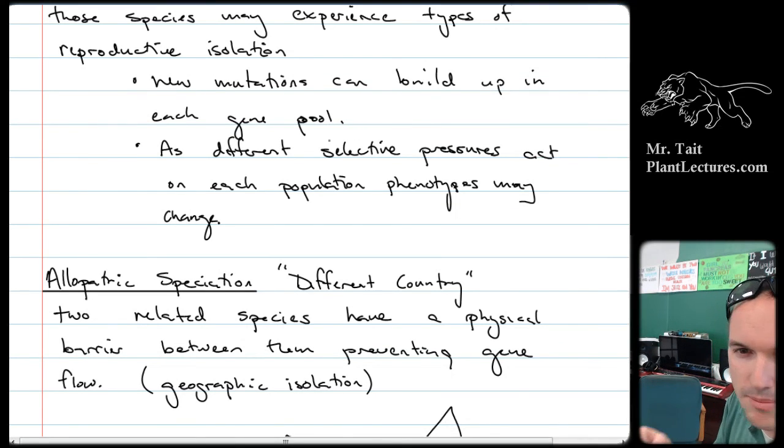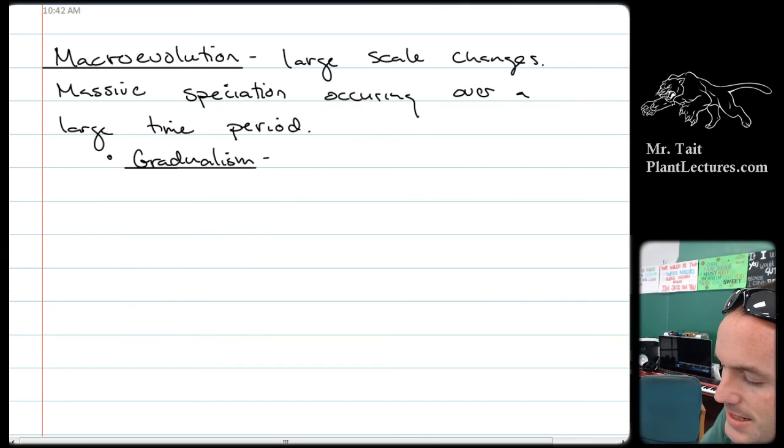So over time, a mutation happens, and then another one happens, and another one happens, and another one happens, and slowly, those species would get more and more different from one another. Okay, that's the idea behind gradualism.